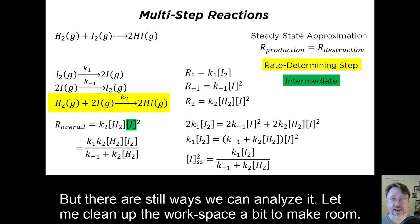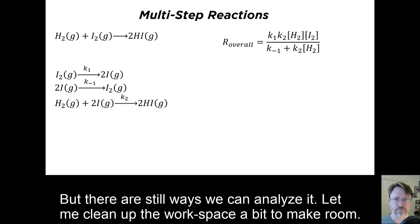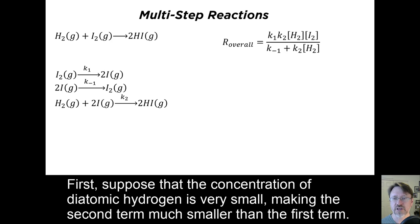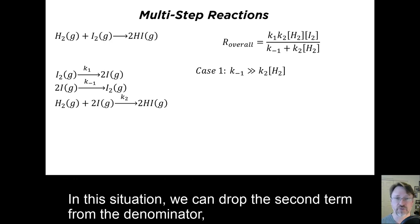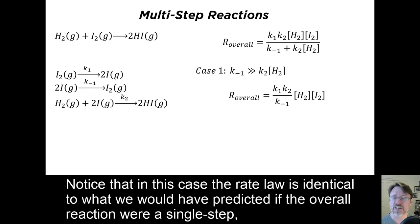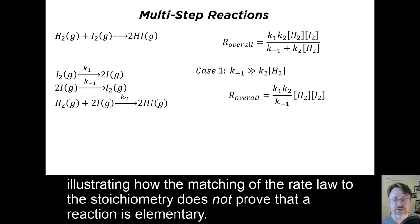Here we have a case where the resulting rate law does not have a straightforward reaction order, but there are still ways we can analyze it. Let me clean up the workspace a bit to make room. Notice that there are two limiting cases for the denominator. First, suppose that the concentration of diatomic hydrogen is small, making the second term much smaller than the first term. In this case, we can drop the second term from the denominator, and the rate law becomes first order in each of diatomic hydrogen and diatomic iodide, becoming second order overall. Notice that in this case, the rate law is identical to what we would have predicted if the overall reaction were a single step, illustrating how the matching of the rate law to the stoichiometry does not prove that a reaction is elementary.